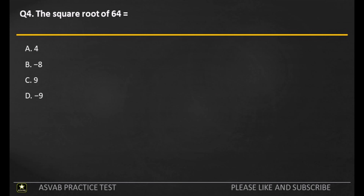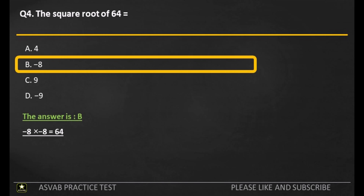Q4. The square root of 64 equals? A: 4. B: minus 8. C: 9. D: minus 9. The answer is B. Minus 8 times minus 8 equals 64.